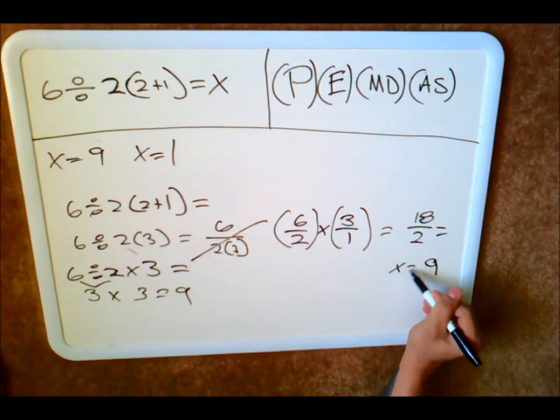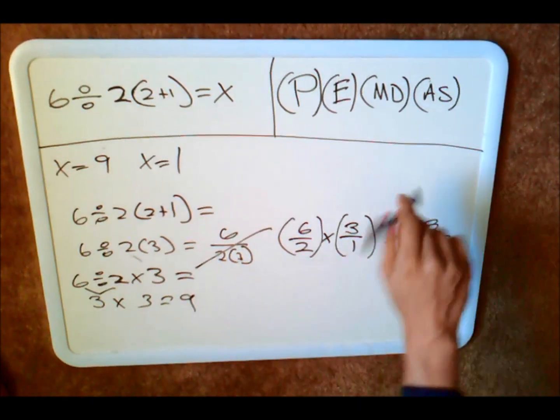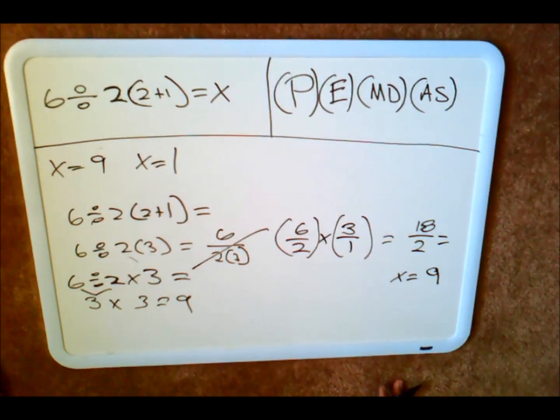So again, we show that x equals 9. The reason people are getting 1 is because they're doing it incorrectly and doing the order of operations backwards. All right. Let's take a look.